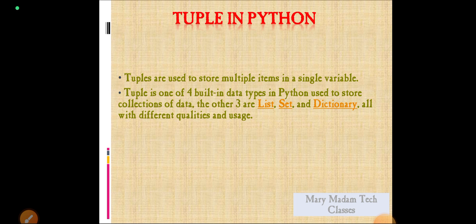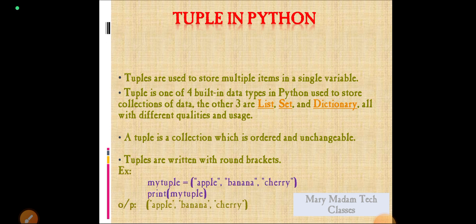These have different qualities and usage. The tuples are collection which is ordered and unchangeable. Here tuples are represented with round brackets or written with the round brackets.